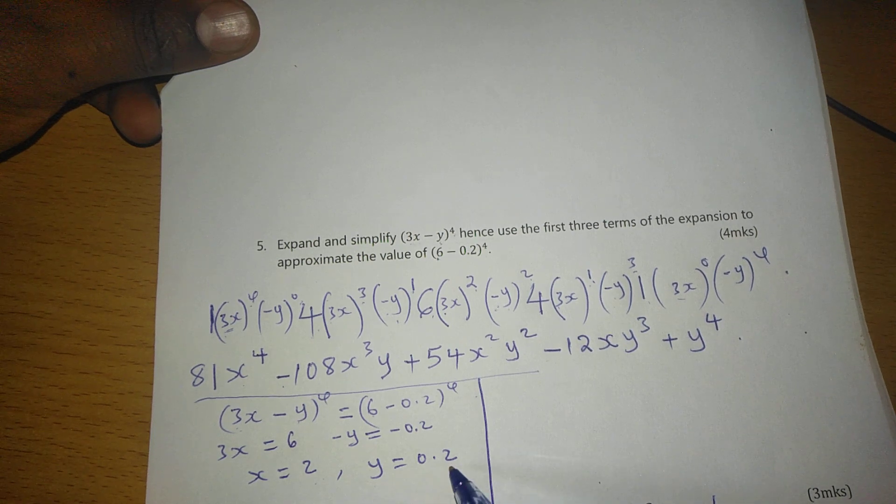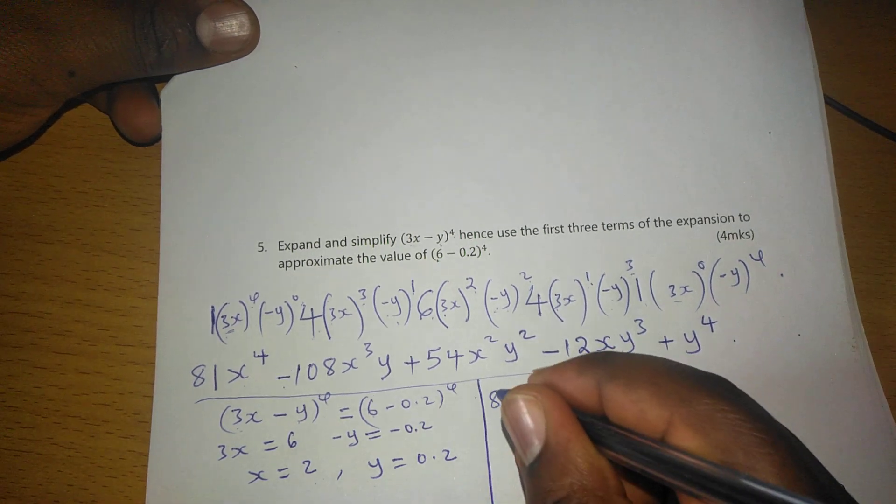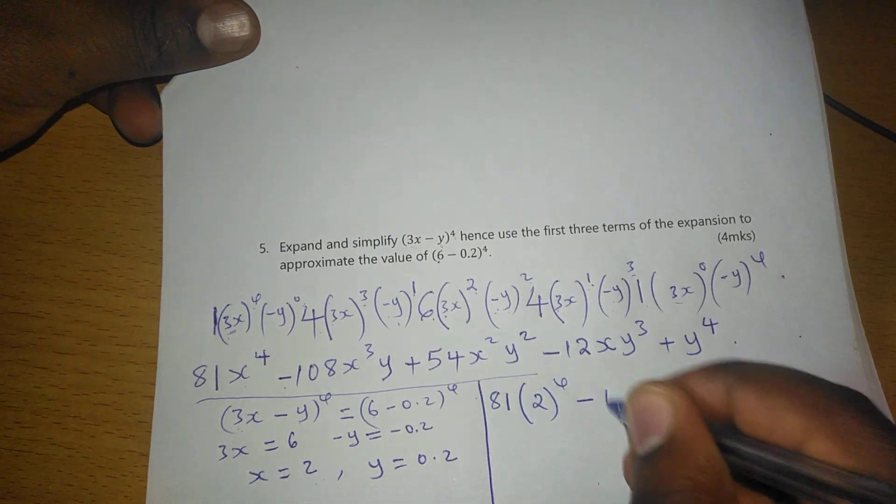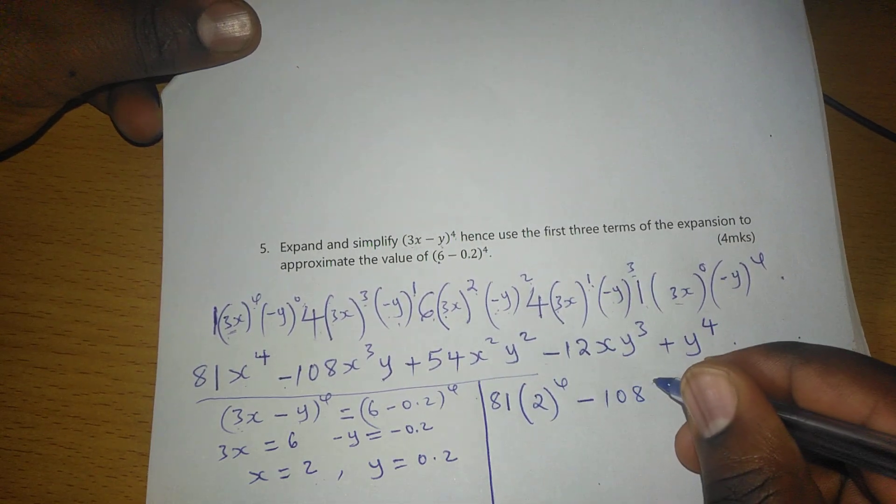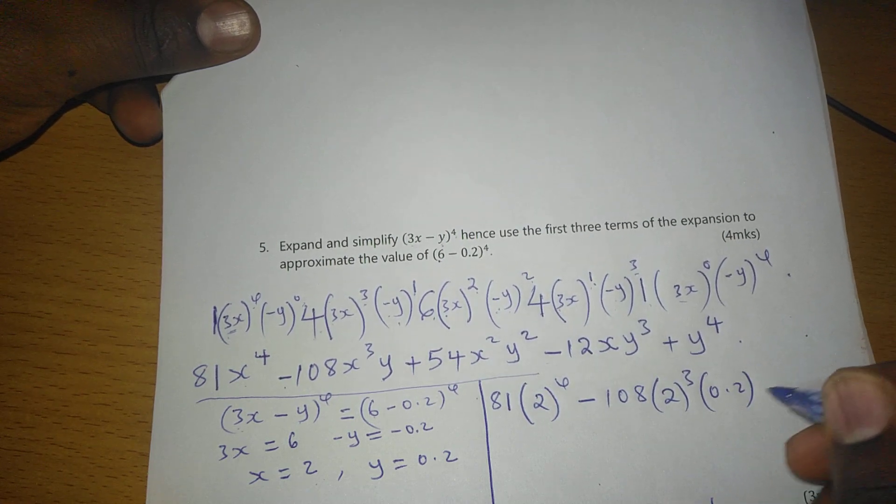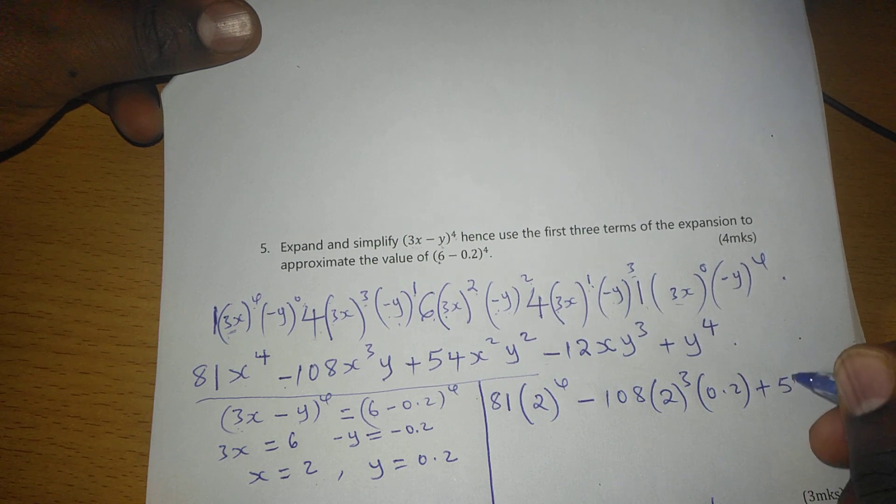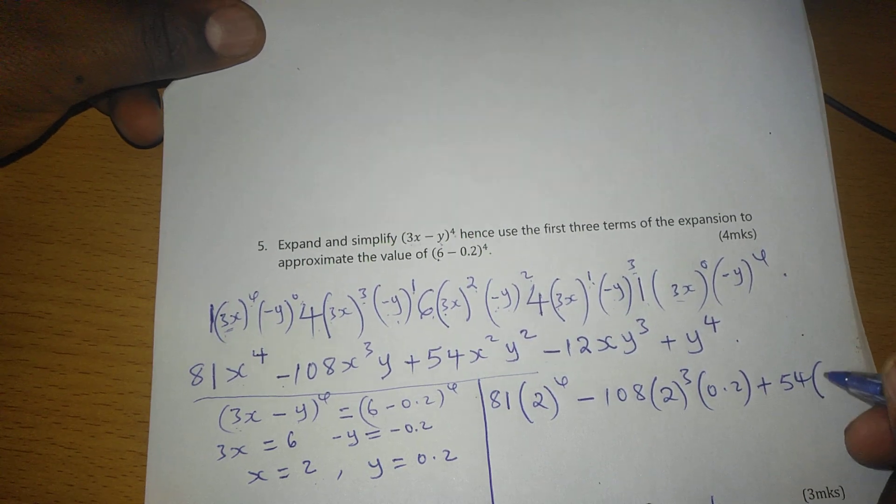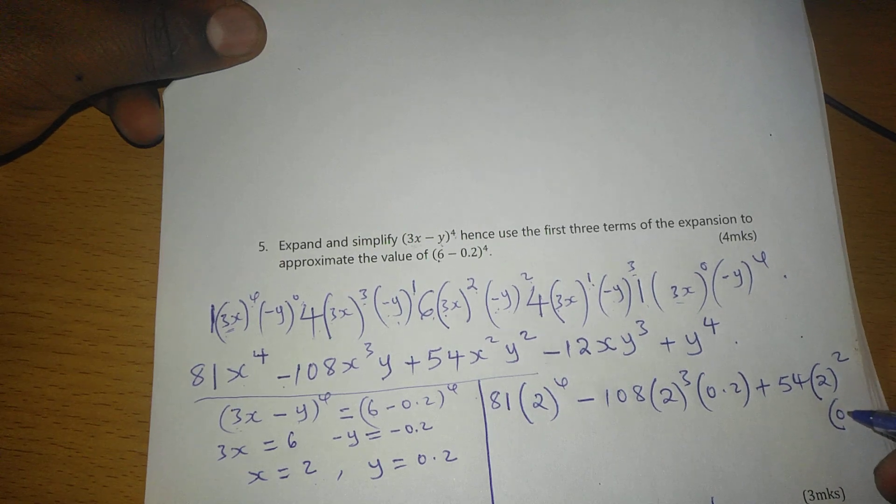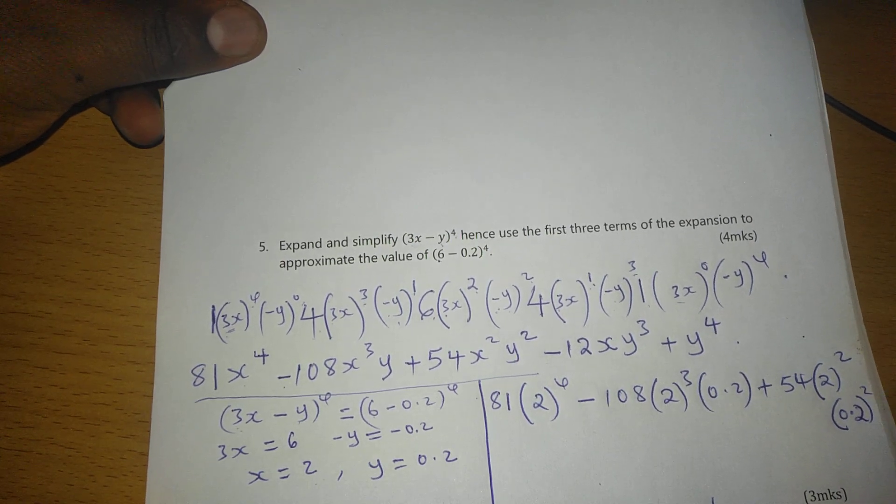Such that now we can substitute where we have x are 2 and where we have y 0.2, such that now we will have 81(2^4) - 108(2^3)(0.2) + 54(2^2)(0.2^2).